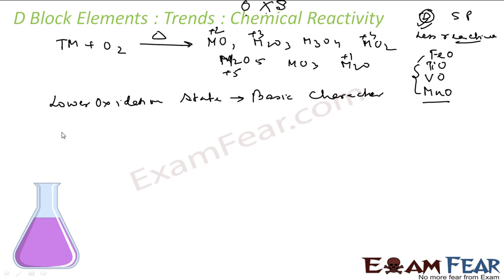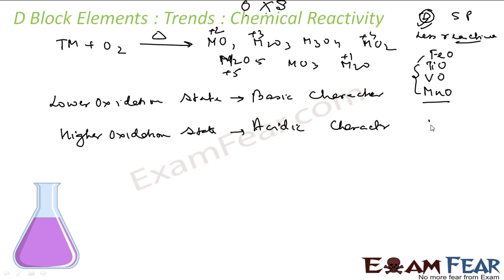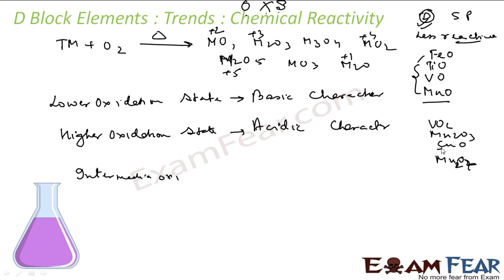When metal oxides are in the higher oxidation state, they behave like acids — they have acidic character. For example, VO2, Mn2O7, and CO3 are acidic. MnO is basic while MnO2 is acidic. For higher oxidation states, V2O5 has +5 and CrO3 has +6 oxidation state — these are all acidic.